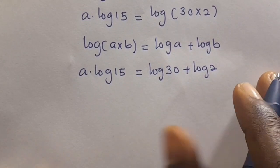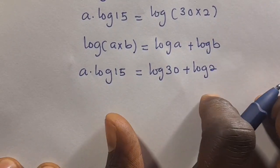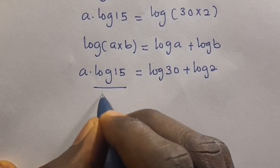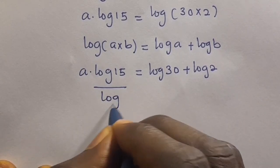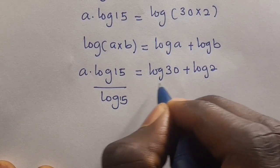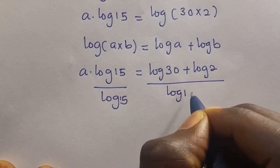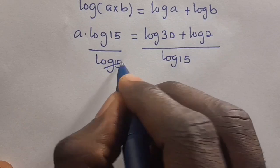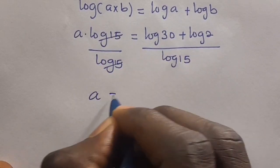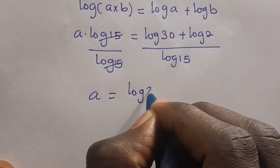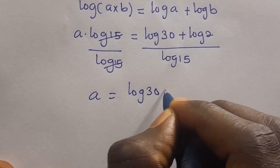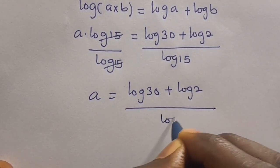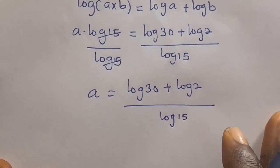From here, we must know that we can divide through by log 15. We cancel the log 15 on the left side, and we only have A left, equal to log 30 plus log 2, all divided by log 15.